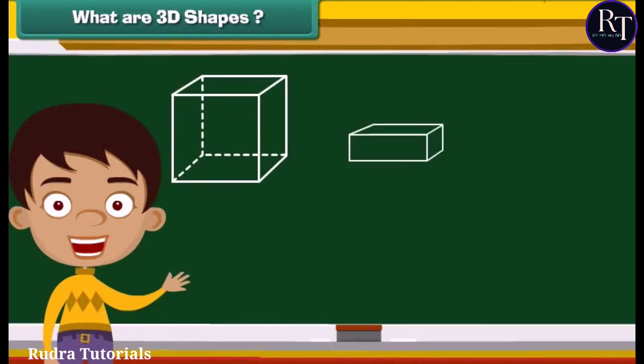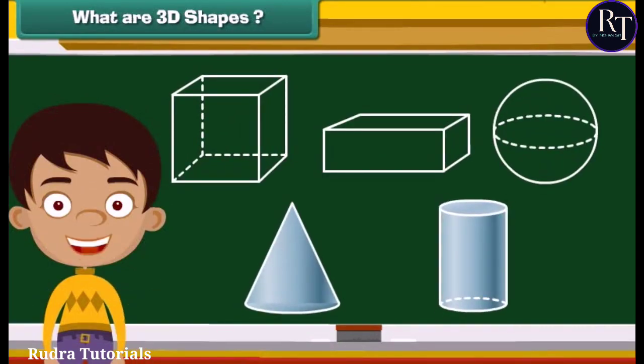Hey, look at these shapes. What did you notice? These shapes have three dimensions: length, width and height. Therefore, we call these shapes as three dimensional shapes. All the three dimensional shapes are solids.